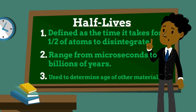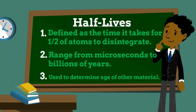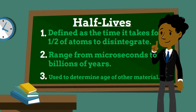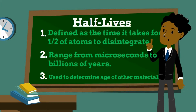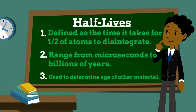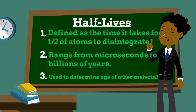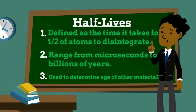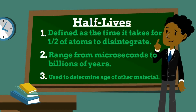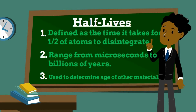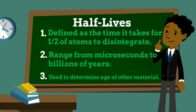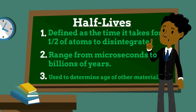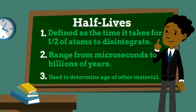The half-lives of certain types of radioisotopes are very useful to know — they allow us to determine the ages of very old artifacts. Scientists can use the half-life of carbon-14 to determine the approximate age of organic objects that are less than 40,000 years old. By determining how much of the carbon-14 has transmutated, scientists can calculate and estimate the age of a substance. This technique is known as carbon dating.